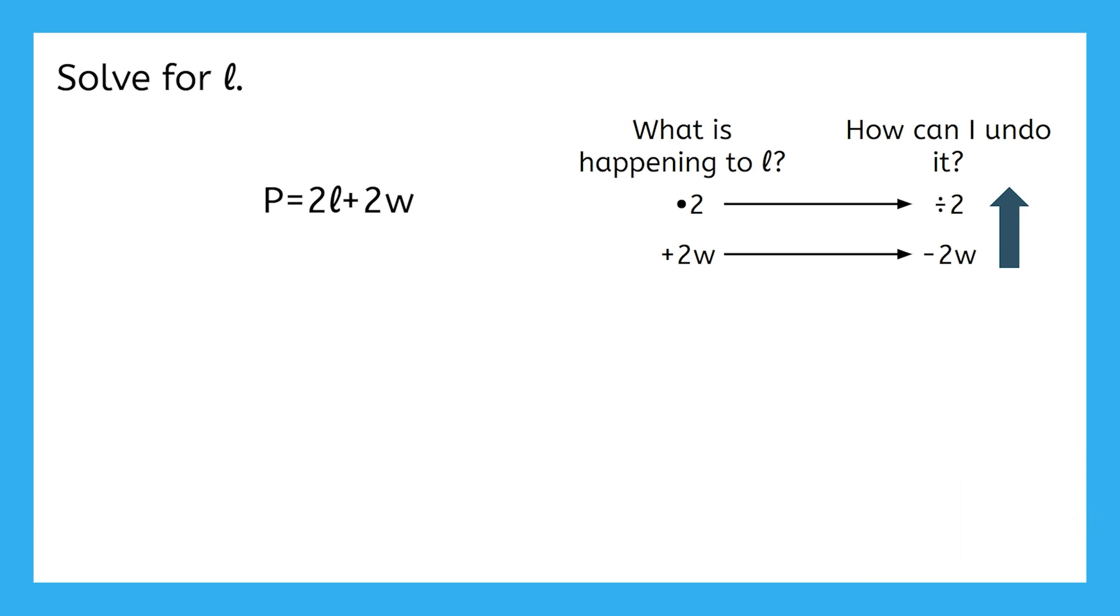When I subtract 2W from both sides, I can see that on the right, 2W minus itself cancels out, leaving just 2L. But what about on the left? What does P minus 2W make?